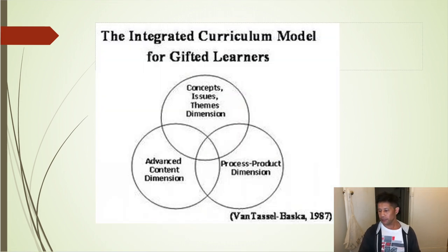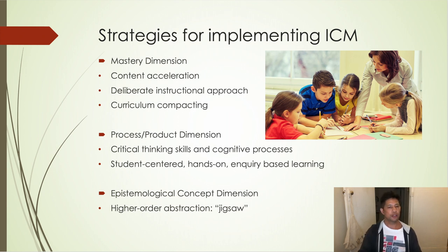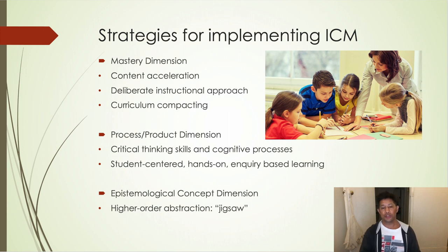There is a simplistic circular tripartite model showing how three ingredients intersect. The mastery dimension includes strategies such as content acceleration, a deliberate instructional approach, and curriculum compacting. The process-product dimension focuses on critical thinking skills and is student-centered, hands-on, and inquiry-based.